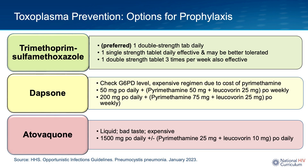The medication options for primary prophylaxis to prevent reactivation of toxoplasma: the first-line regimen is trimethoprim-sulfamethoxazole, which I'll refer to as TMP-SMX, with preferred dosing of one double-strength tablet once a day. Note that this is the same dosing used for Pneumocystis prophylaxis when the CD4 count is less than 200, so TMP-SMX conveniently provides prophylaxis against both Pneumocystis and toxoplasmosis. Alternative TMP-SMX dosing includes a single-strength tablet once a day or a double-strength tablet three times a week.